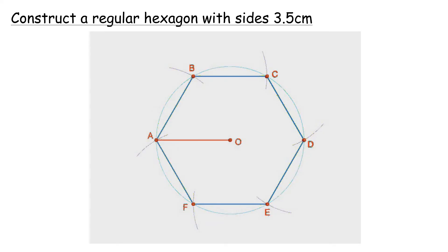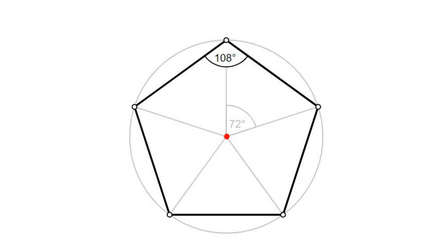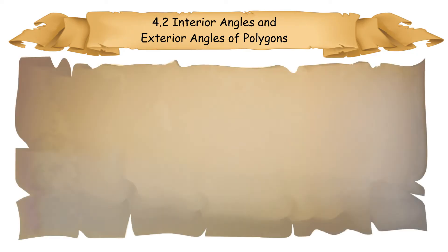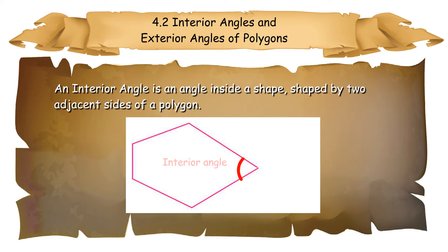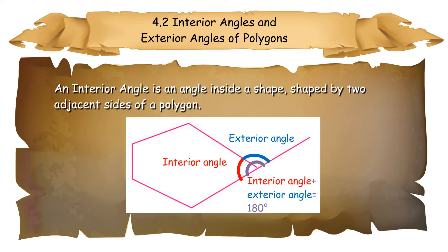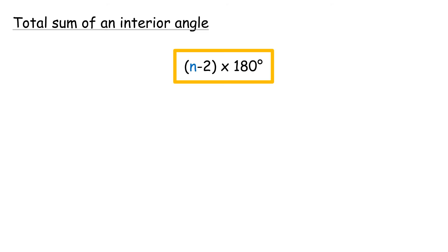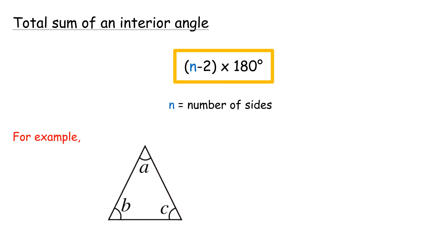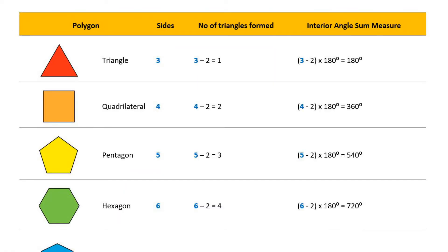Regular polygons can also be constructed by dividing the angles at the center of a circle according to the number of sides. 4.2 Interior Angles and Exterior Angles of Polygons. An interior angle is an angle inside a shape formed by two adjacent sides of a polygon. Interior angle plus exterior angle equals 180 degrees. The total sum of interior angles of a polygon equals (N minus 2) times 180 degrees, where N is the number of sides.